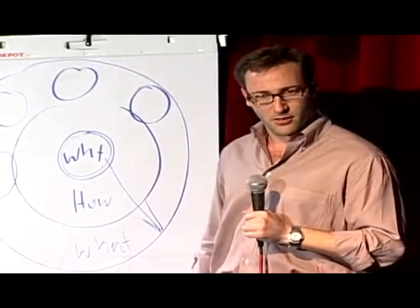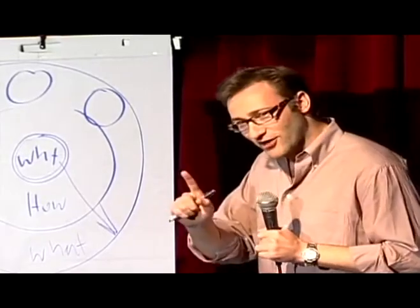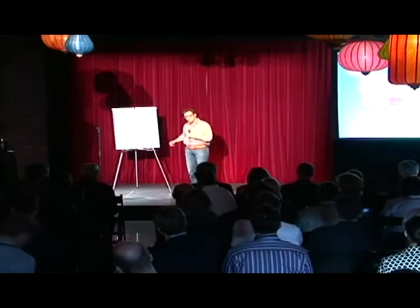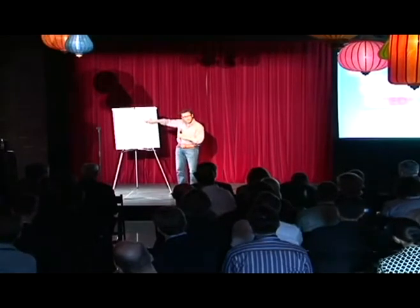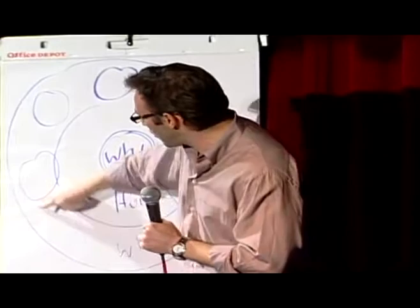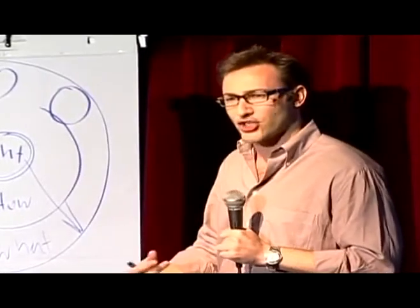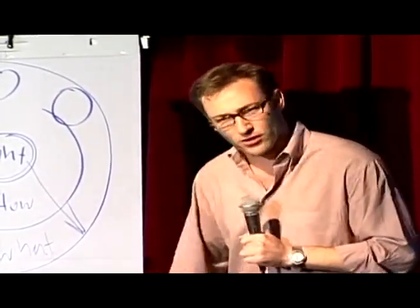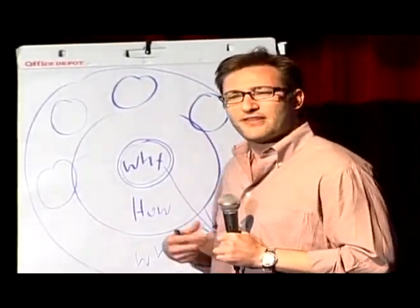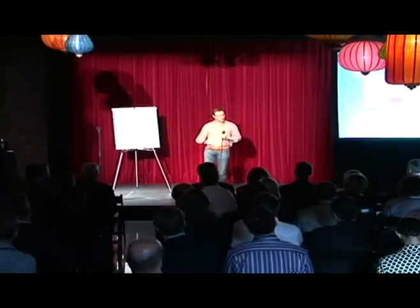Here's the best part. None of what I'm telling you is my opinion. It's all grounded in the tenets of biology. Not psychology, biology. If you look at a cross-section of the human brain, looking from the top down, what you see is the human brain is actually broken into three major components that correlate perfectly with the golden circle. Our newest brain, our homo sapien brain, our neocortex, corresponds with the what level. The neocortex is responsible for all of our rational and analytical thought and language. The middle two sections make up our limbic brains, and our limbic brains are responsible for all of our feelings, like trust and loyalty. It's also responsible for all human behavior, all decision-making, and it has no capacity for language.